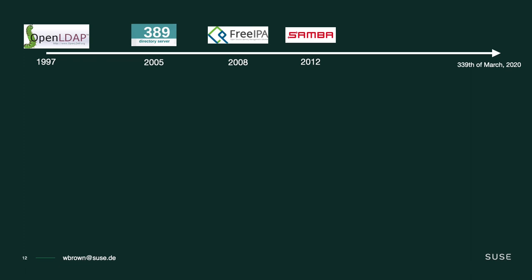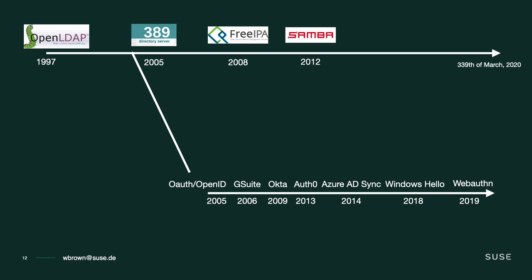But the world is not just open source. In parallel, we've seen a lot of other things developing in identity management, especially in proprietary technologies. We see the rise of OpenID and OAuth, identity as a service through things like G Suite, Okta, and Azure Active Directory Sync. And we start to see the rise of hardware-backed cryptographic authenticators with things like Windows Hello, Apple's Touch ID, and WebAuthn. A lot of these things are very clean-slate — OAuth and OpenID are single-sign-on mechanisms but don't take anything from Kerberos. Most identity-as-a-service platforms are all clean slate and web-first, gaining popularity due to ease of use and integrations.